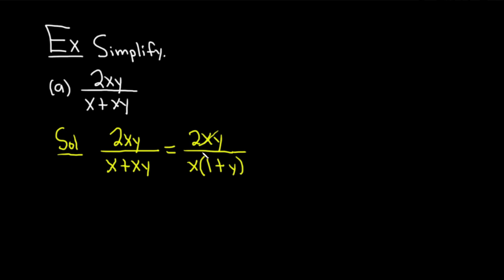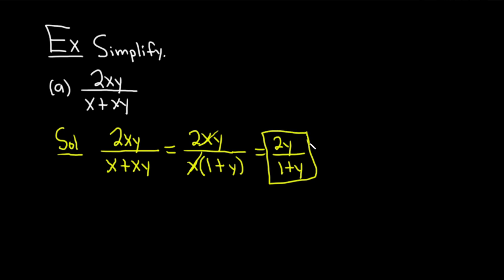The x's cancel, and so we end up with 2y over 1 plus y. This would be the simplified version of our expression.